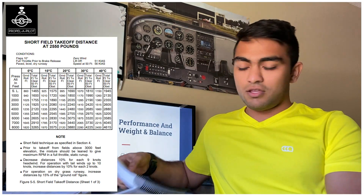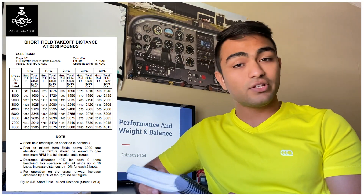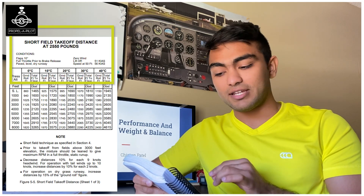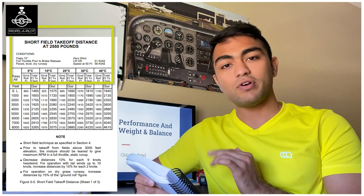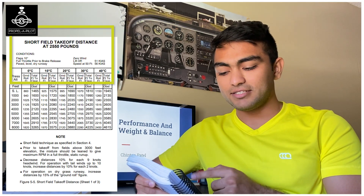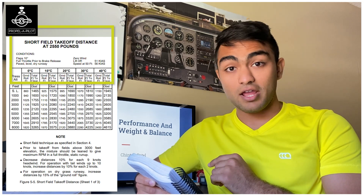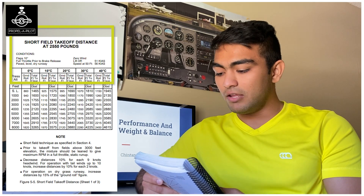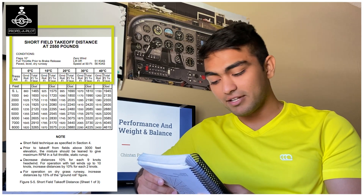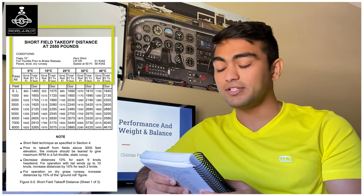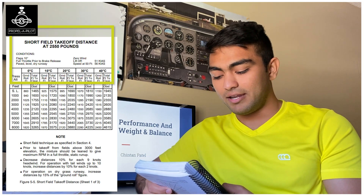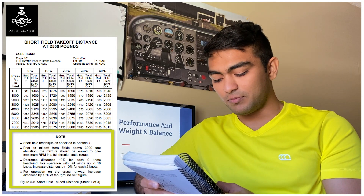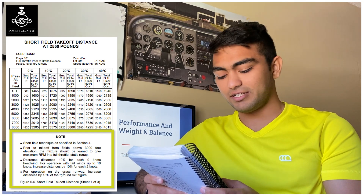Now let's read the notes around the table. This is a table for the Cessna 172S Nav 3 short field takeoff distance at 2,550 pounds. Conditions are: flaps 10 degrees, full throttle prior to brake release, paved level dry runway, zero wind. Lift-off is at 51 knots indicated airspeed, and speed at 50 feet should be 56 knots indicated. There are also notes about short field technique as specified in section 4.